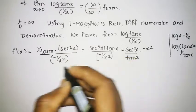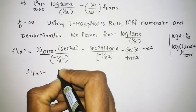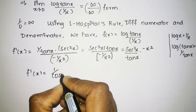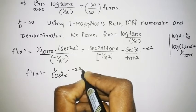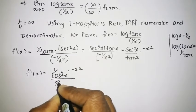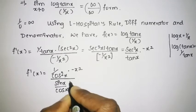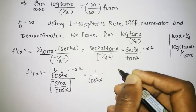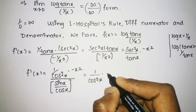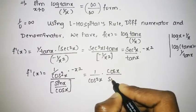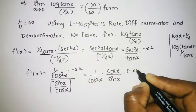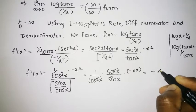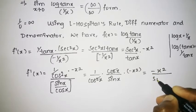Rearranging, f'(x) equals 1 divided by cos²x into minus x squared, divided by tan x written as sin x divided by cos x. The cos x goes to the numerator, so one cos x cancels, leaving minus x squared divided by sin x into cos x.